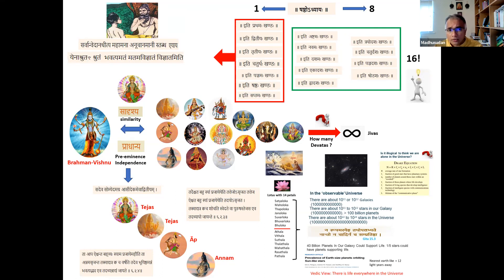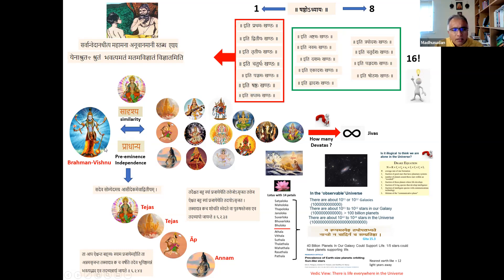Uddalaka goes on in that khandha to say Paravidya is the most important thing in life. If you know Paravidya, then Aparavidya is as good as known. He takes two concepts — Sadrishya (similarity) and Pradhanya (preeminence and independence) — to illustrate the view that if you know the supreme Brahman, you know all other entities by similarity, or because all other entities are dependent on Him. Those are the two approaches Uddalaka takes to establish the doctrine of ena-ashrutam-shrutam-bhavati, amatam-matam-avignatam-vignatam.